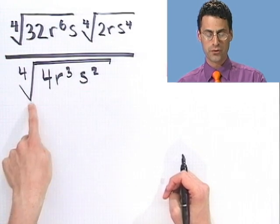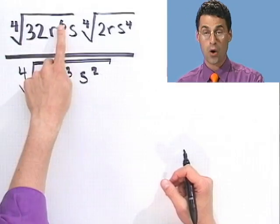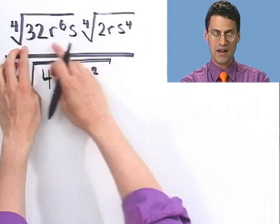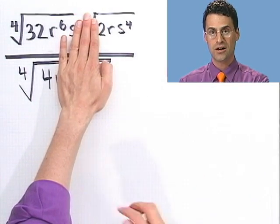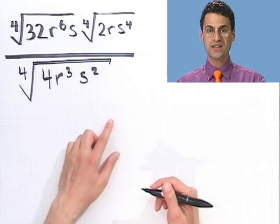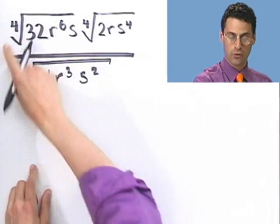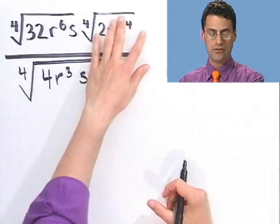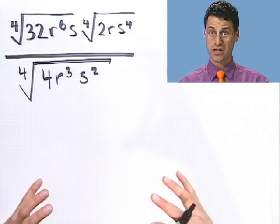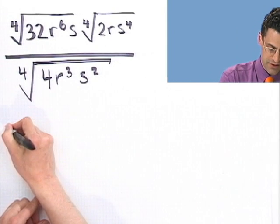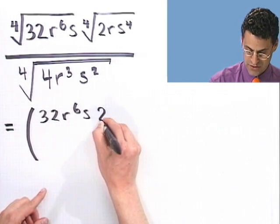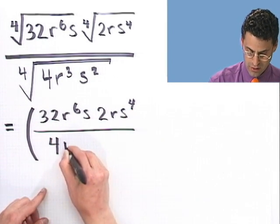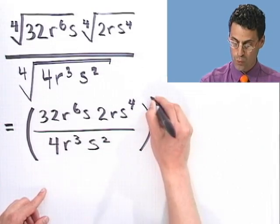My thinking process is pretty straightforward: I see fourth roots everywhere, so I'll use properties of exponents to combine everything into one big fourth power. A fourth root on top and a fourth root on the bottom is just one huge fourth root. So I write it as the fraction 32r to the sixth s times 2rs to the fourth, all divided by 4r cubed s squared, raised to the 1/4 power.